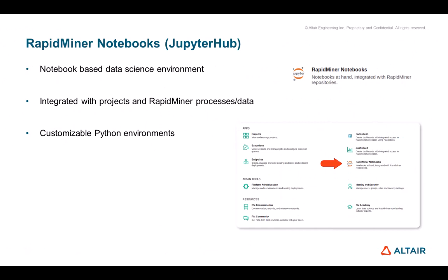RapidMiner notebooks are provided by a software called JupyterHub, which is a common notebook-based data science environment. This means that you can mix documentation and code in a notebook, execute code fragments or the entire notebook, and get the results of any code fragment in the same notebook. RapidMiner notebooks are integrated with the rest of the AI Hub — they integrate into the project's version control system and are also able to execute RapidMiner processes or access RapidMiner data in the repository. Notebooks use customizable Python environments, just like Studio.